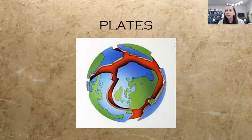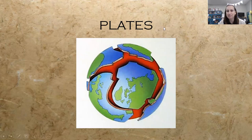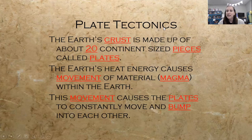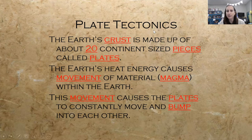Then it's time to really zoom in on the plates — and I always tell the kids we're not focusing on the plates that you eat dinner on. These plates are much bigger. They are huge sections of the Earth's crust. The Earth's crust is made up of about 20 continent-sized pieces called plates. The Earth's heat energy, or thermal energy, causes movement of magma within the Earth, specifically from the mantle. This movement causes the plates to constantly move and bump into each other, and again, this is a gradual process taking place over time.